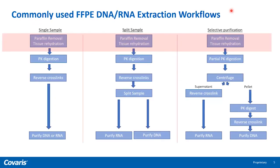Currently, there are three workflows for processing FFPE samples. One can start with a single sample and then take it through paraffin removal, tissue rehydration, PK digestion, reverse cross-link, and purify either DNA or RNA. Second, you can start with a single sample but then split the sample after the reverse cross-linking step — from one you purify RNA, from the other you purify DNA. In this workflow, you do sacrifice the amount of RNA and DNA that you get from one sample.